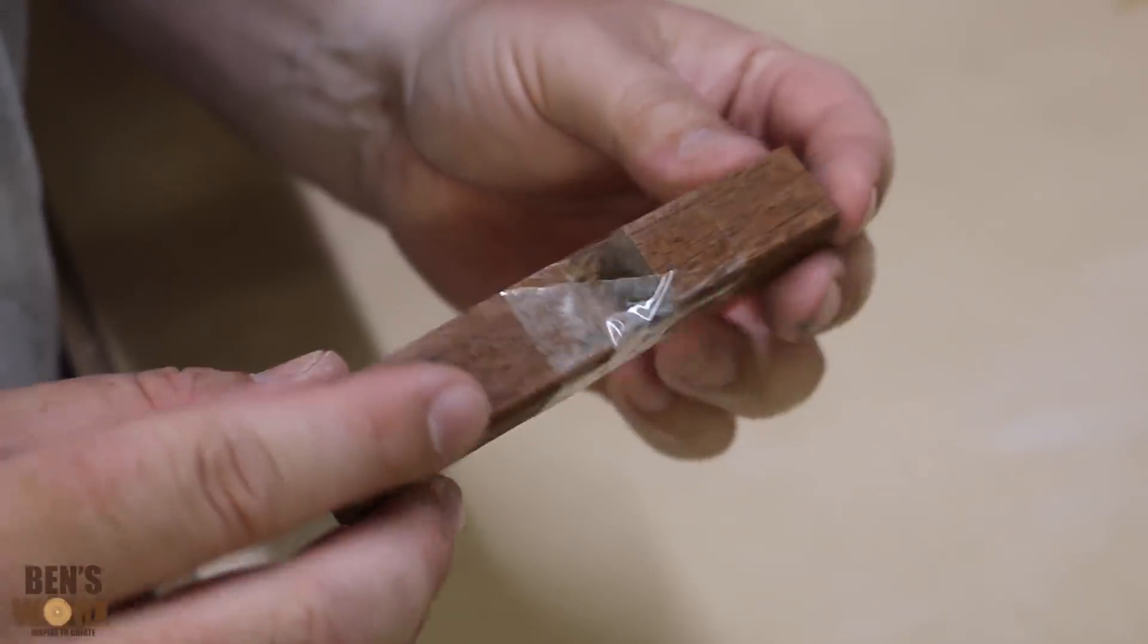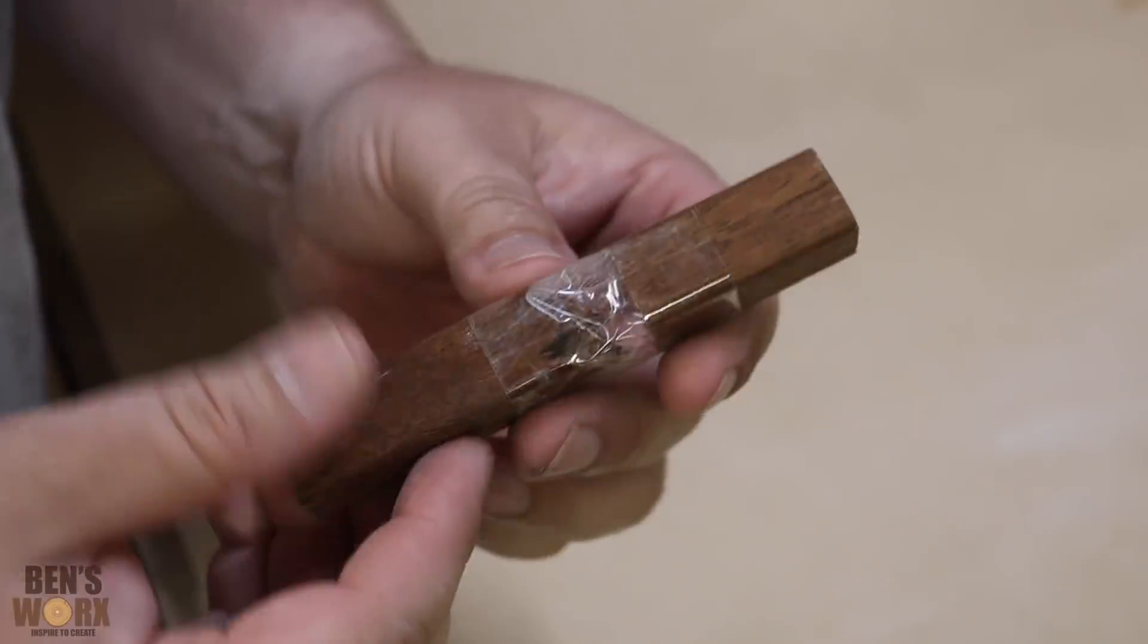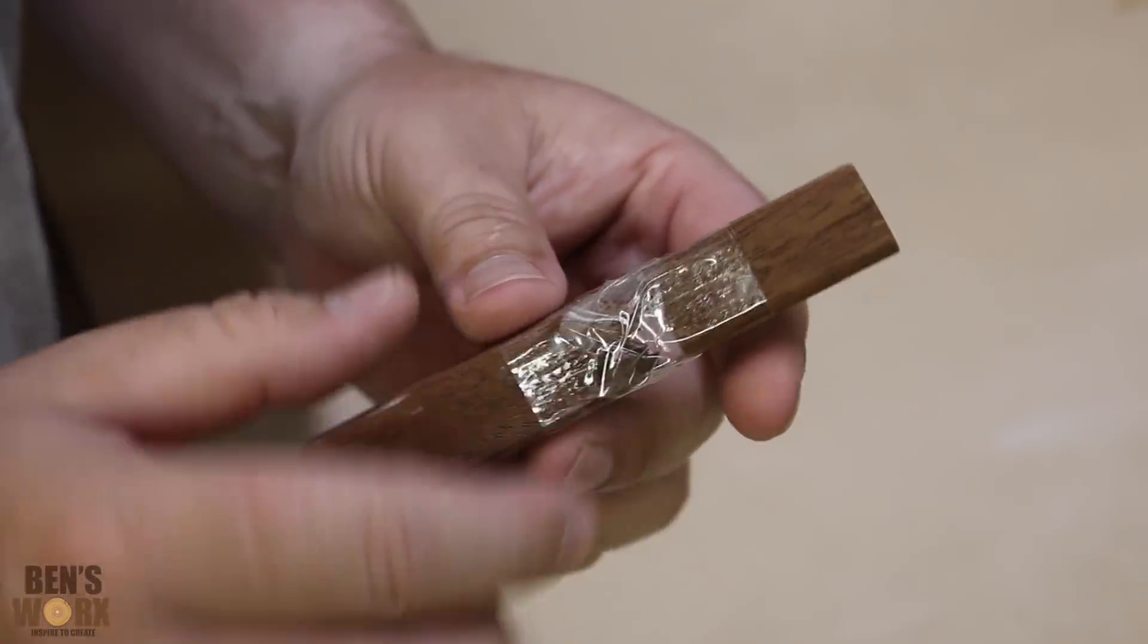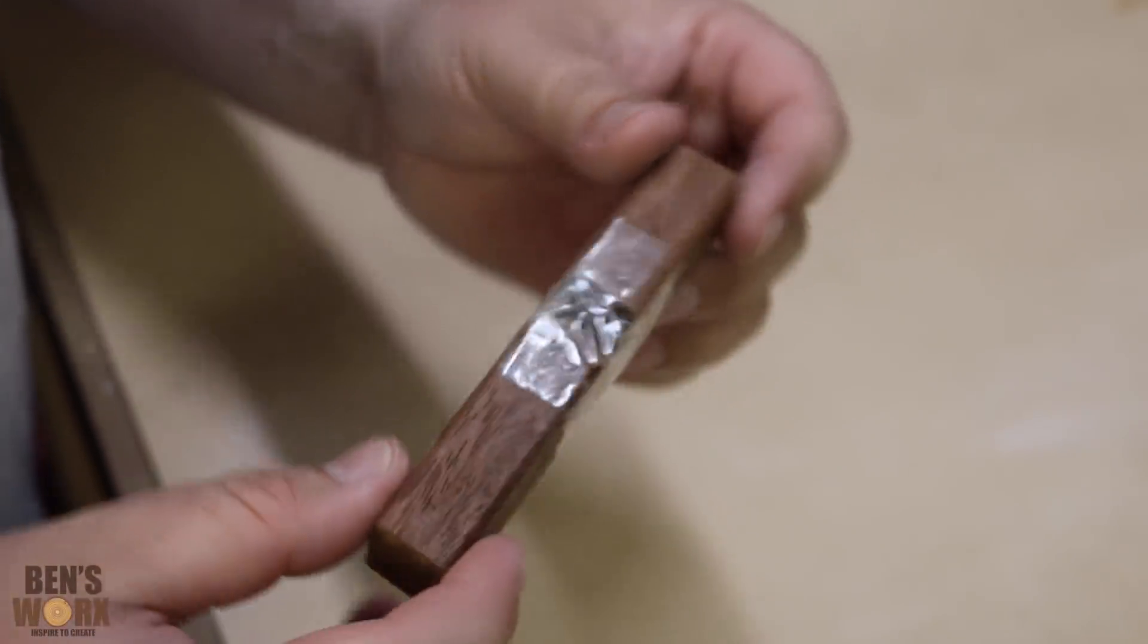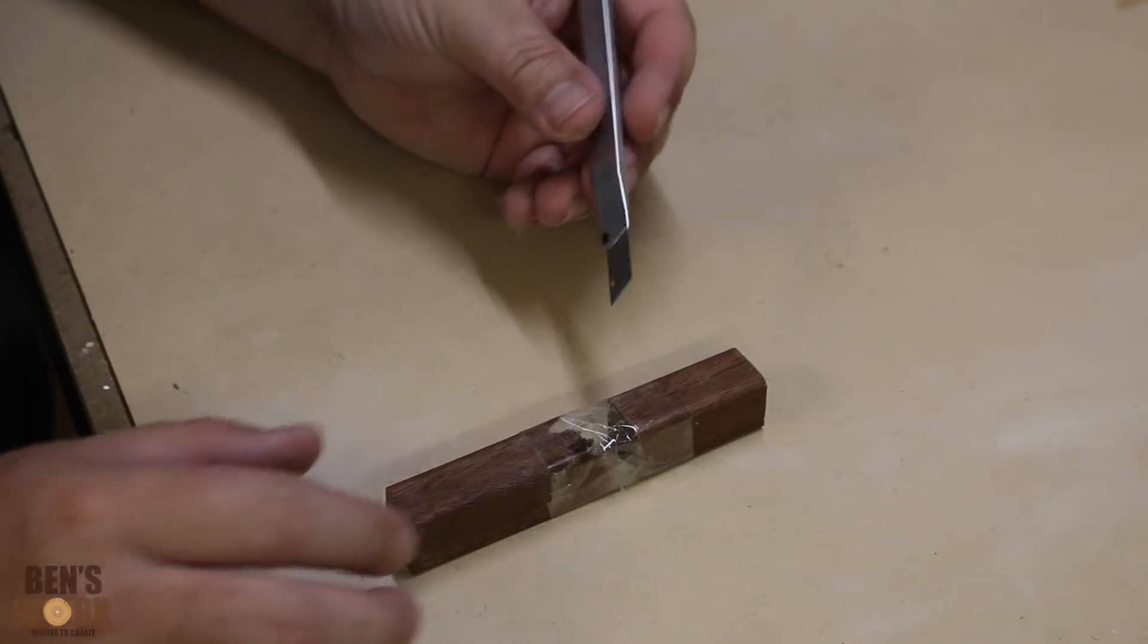Now it doesn't have to be too perfect because we are going to sand this block down, so any little ripples that are in there we'll take out with that. So now I'm just going to cut a hole so we can pour the resin in.